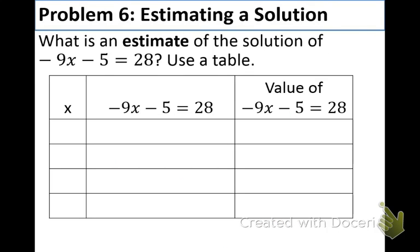And the last example. We have the equation, negative 9x minus 5 equals 28. And it says, what is an estimate of the solution? This means we're not going to get an exact value for our answer. We're going to have to estimate. So, now, if we plugged in 0, we would get a negative number. And if you plugged in 1, you'd also get a negative number. Well, take a look. We're trying to get positive 28. So, that means we don't want to use 0, 1, or any positive number to plug in. Let's try some negatives, such as negative 1, negative 2, negative 3, and negative 4.